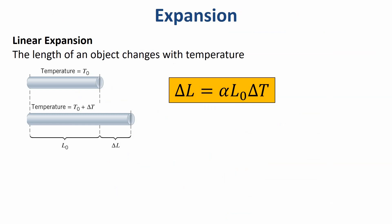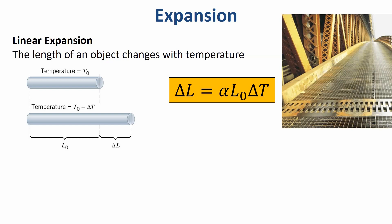So what does temperature do? You probably know that the length of an object can change with temperature. If I define my variables where delta L is the change in length from my original length L₀, delta T is the change in temperature in either Celsius or Kelvin — I can use either, but definitely not Fahrenheit — and alpha is some constant based on the material, then we have a really nice relationship. The Eiffel Tower will grow or shrink by several inches from winter to summer because of linear expansion. Bridges have expansion joints because the bridge gets several inches longer in summer and shorter in winter, and we don't want cracks to develop. Look up alpha online and you can calculate what's going to happen.